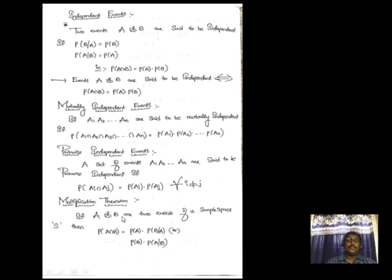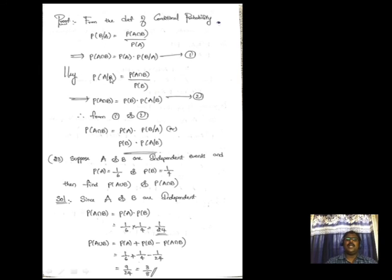Multiplicative Theorem: If A and B are two events of a sample space S, then P(A ∩ B) = P(A)·P(B|A) or P(B)·P(A|B). Proof: By the definition of conditional probability, P(B|A) = P(A ∩ B)/P(A), so P(A ∩ B) = P(A)·P(B|A) — equation (1). Similarly, P(A ∩ B) = P(B)·P(A|B) — equation (2). From (1) and (2) the theorem is proved.